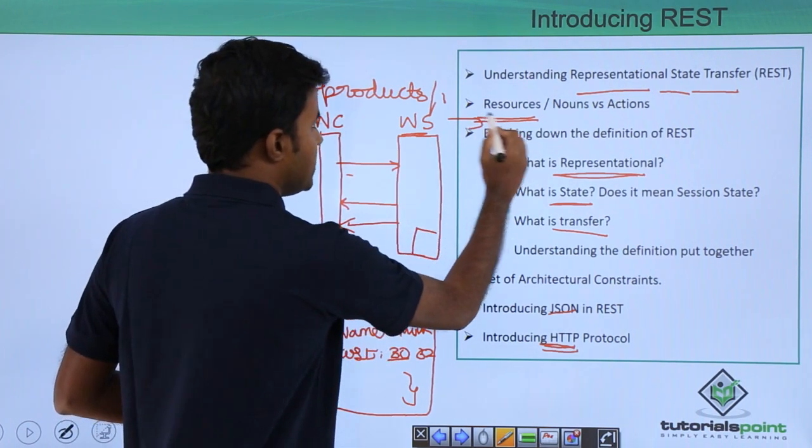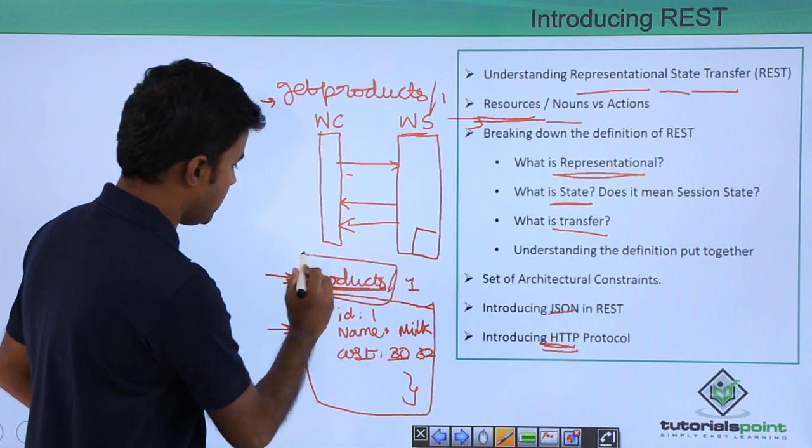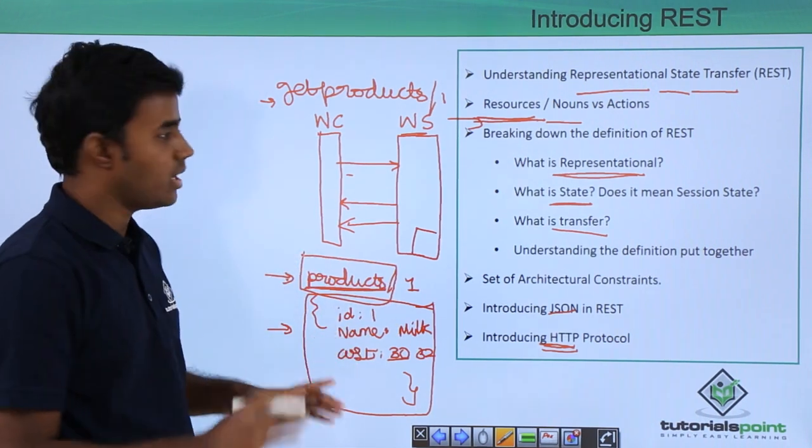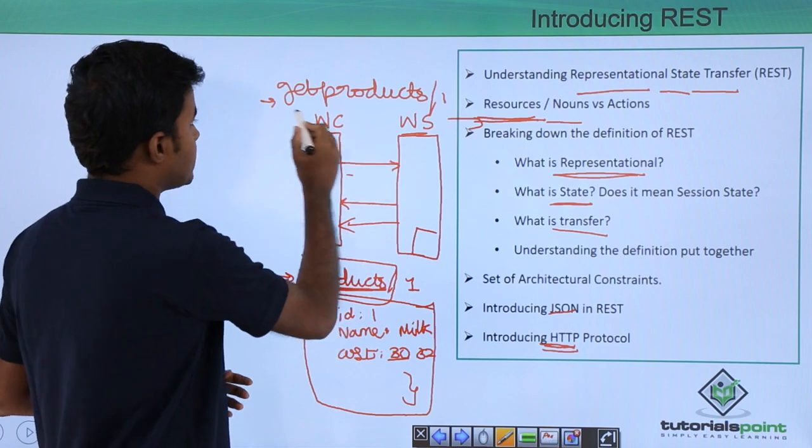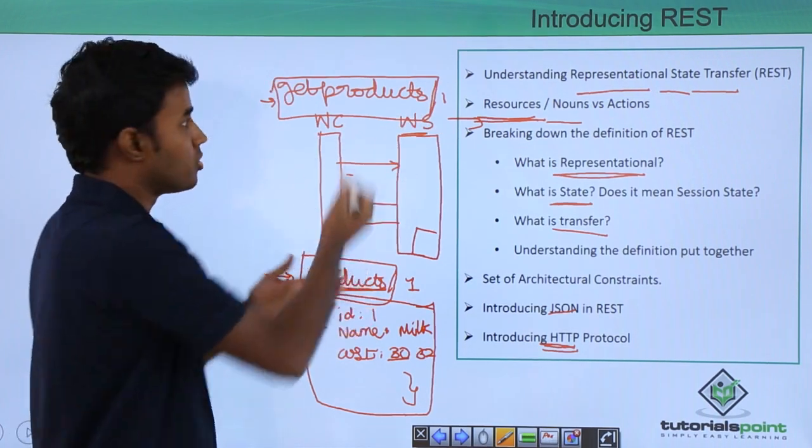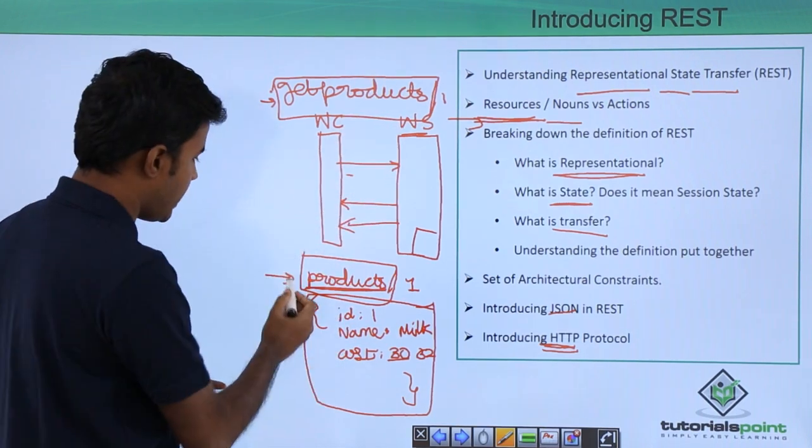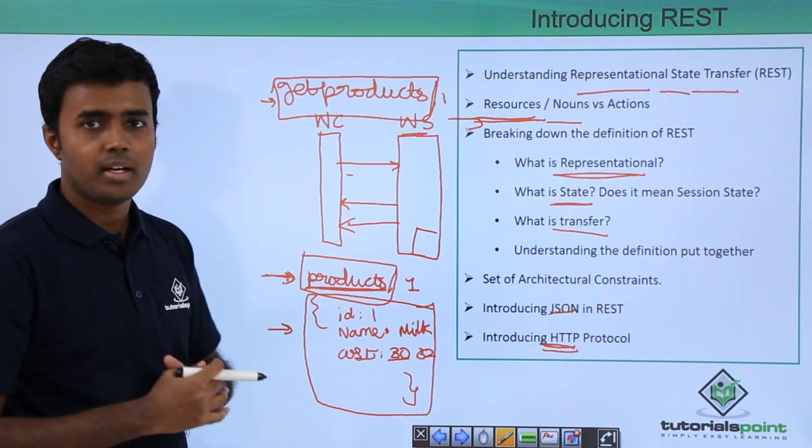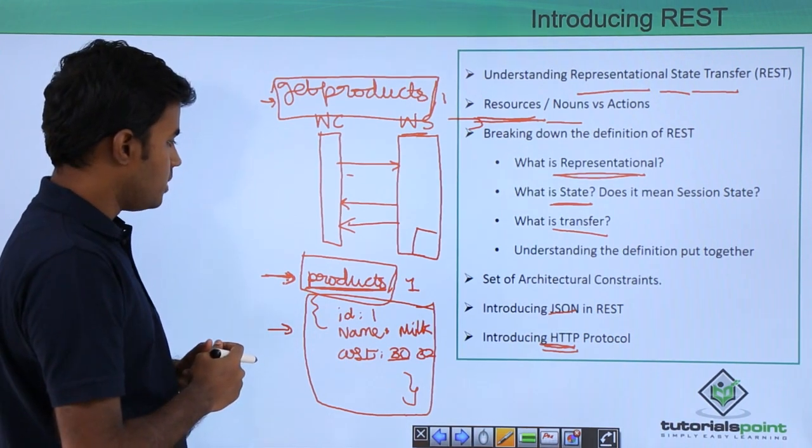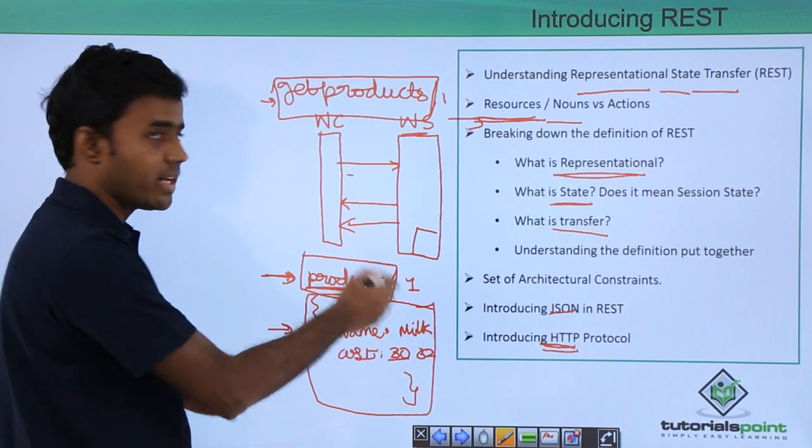As we saw in this particular line, REST is always about resources or nouns. Products is nothing but a noun or a resource. Whereas get products, this is not a noun, this is a verb, this is an action. SOAP is completely full of verbs and actions, but REST is only full of nouns.